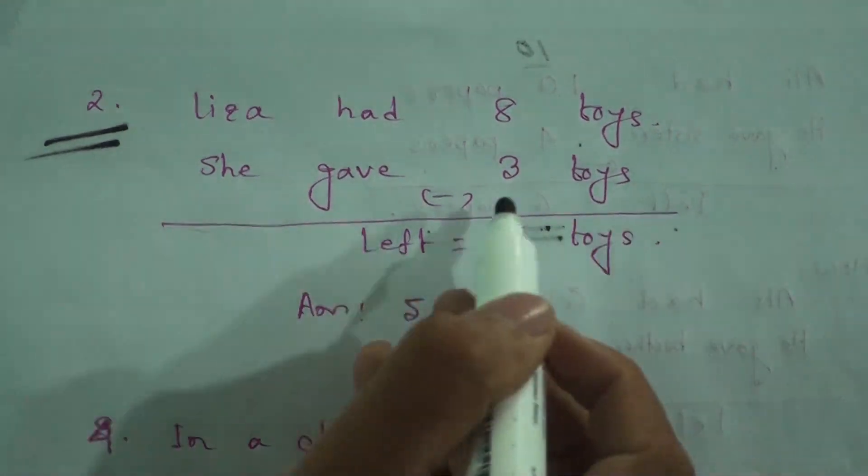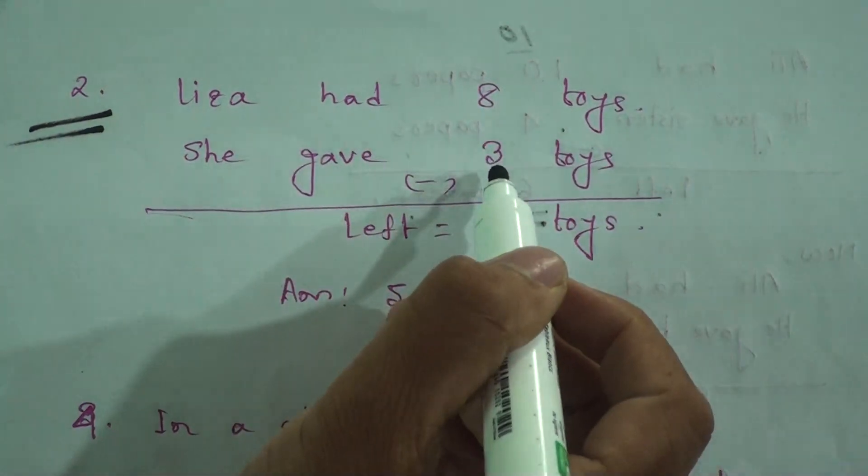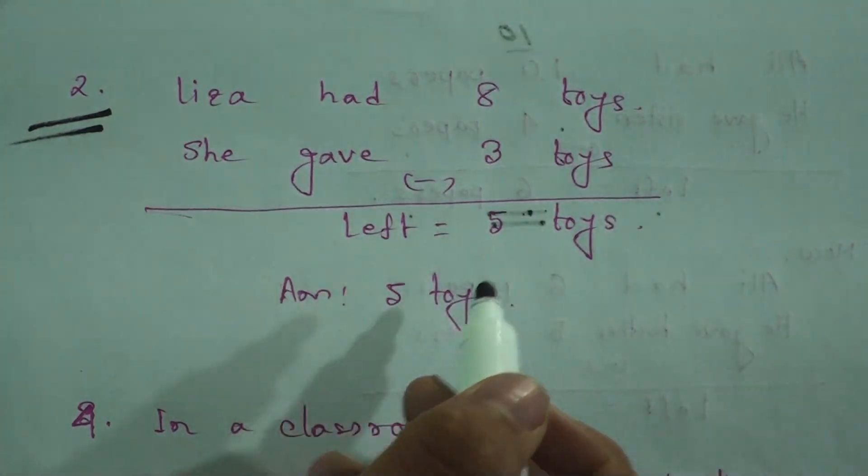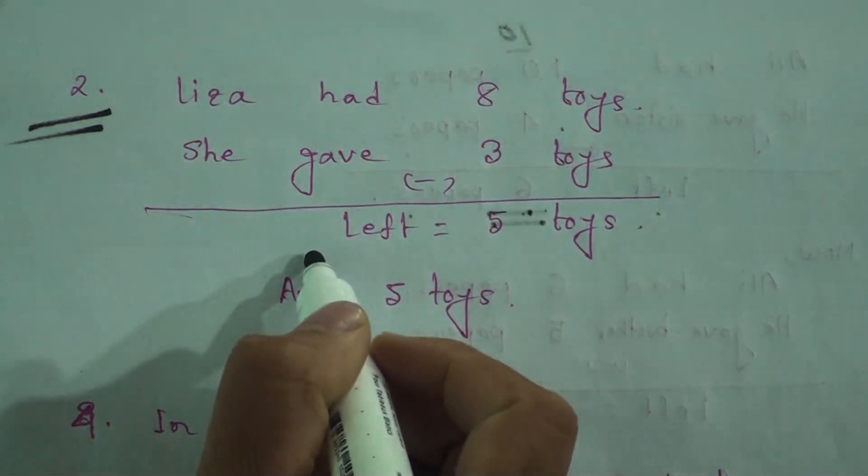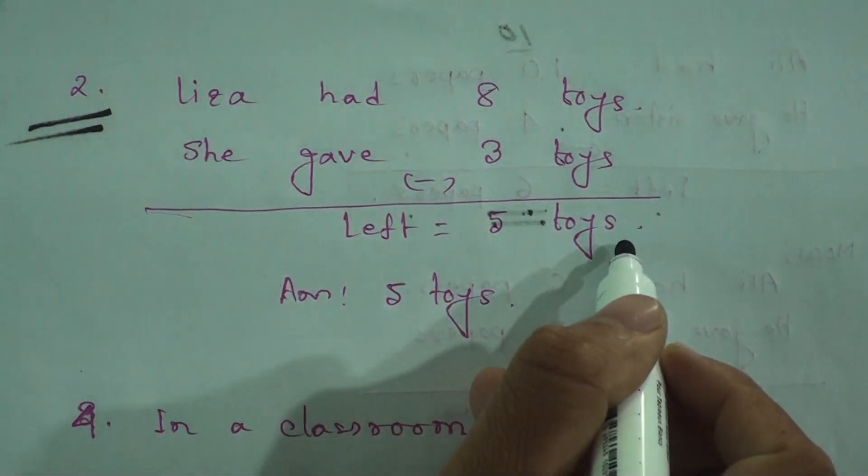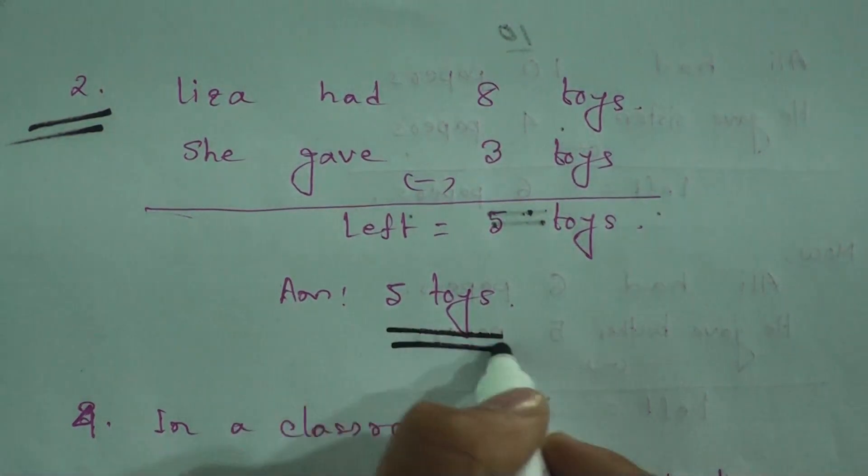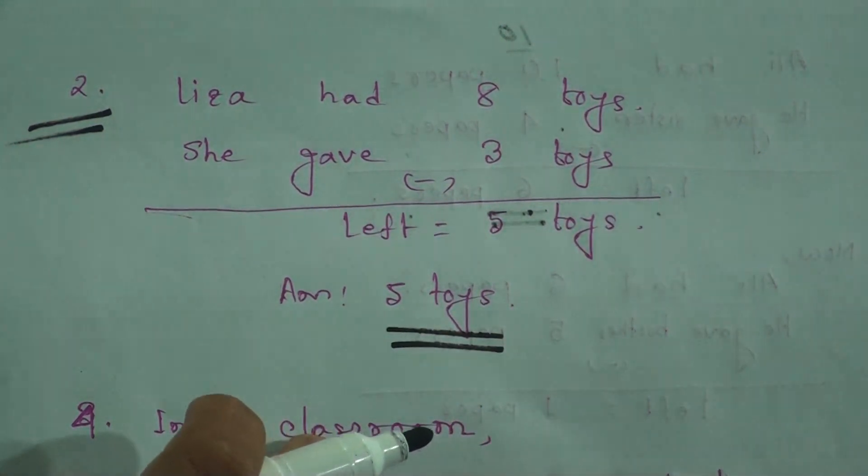Now subtract three from eight. What will be three from eight? Three, four, five, six, seven, eight. So left is five toys, and the final answer is five toys. So how many toys are left with her? Five toys. Hope, my dear students, you can understand this one.